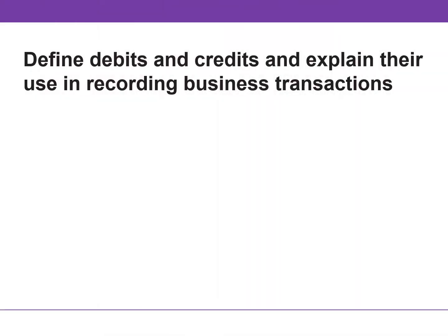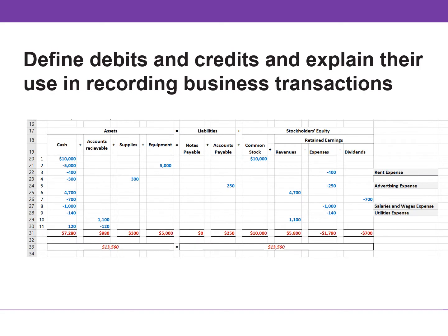This video will discuss how accounts, debits, and credits are used to record business transactions. This is the solution for Problem 1-1a. We recorded transactions using a tabular summary. This might work for a small company like Pioneer that had only 11 transactions, but as the business expands, this method will not be sufficient. We need a formal structure to enter transactions into the accounting system, using accounts, debits, and credits rather than a plus or minus system.